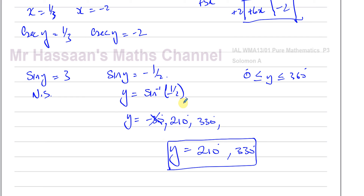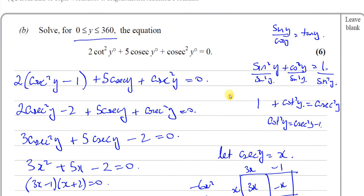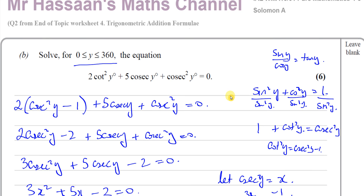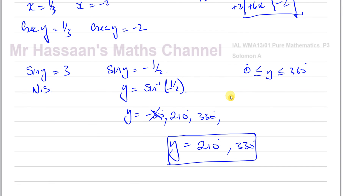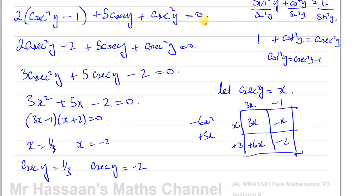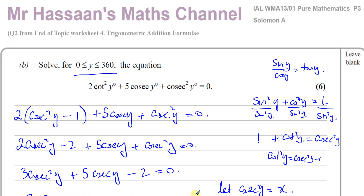That's the answer to question two from this endotopic worksheet. I hope you understood. Other questions from the Solomon A papers can be found from the link shown. Other questions from this endotopic worksheet on trigonometry, chapter four from P3, can be found in the playlist area. You can subscribe to my channel by clicking the link at the end of the video. Thank you for watching and see you soon.